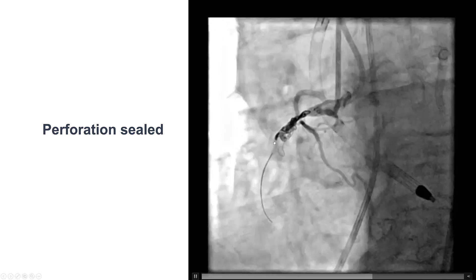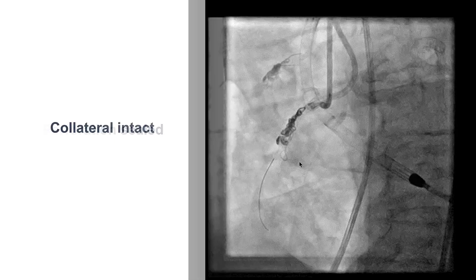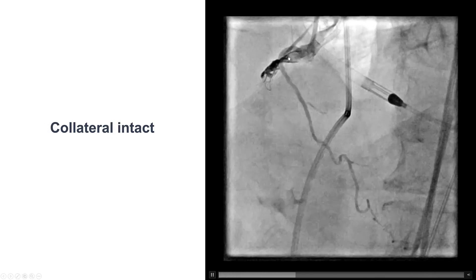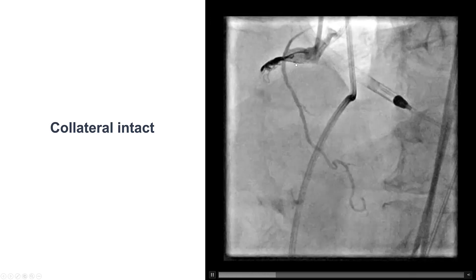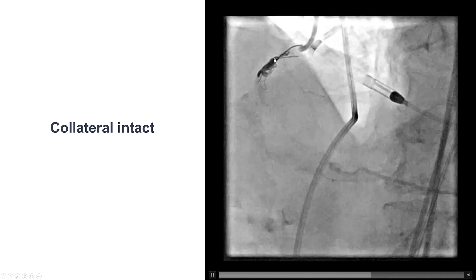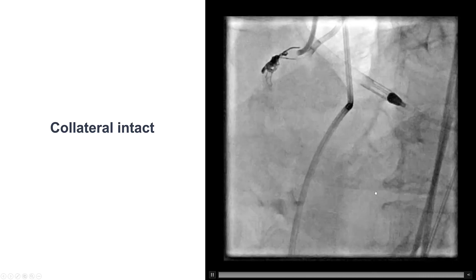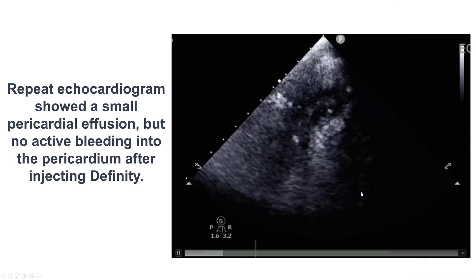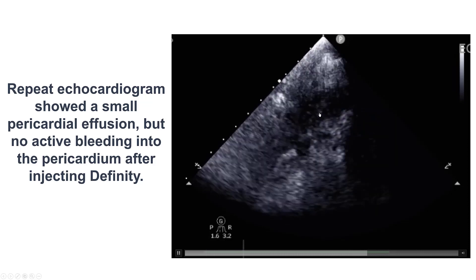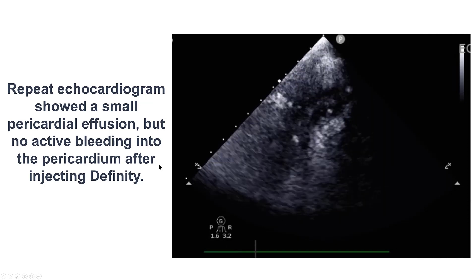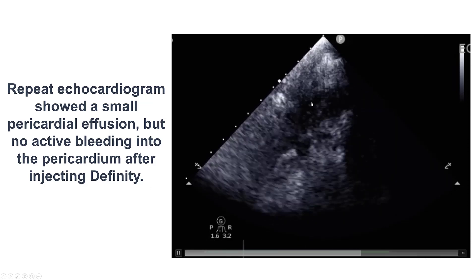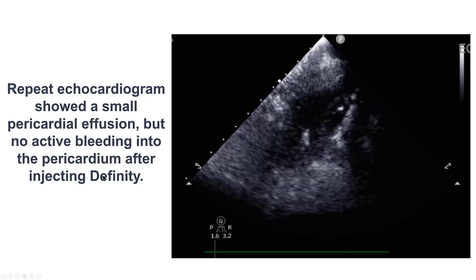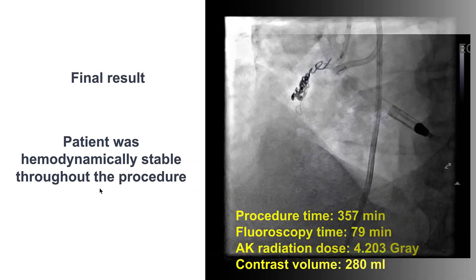We did have a little bit of the coil coming back after release, but the good news was that the collateral — the conus branch feeding the PDA — remained patent throughout the procedure. Echo at the end of the case showed a small pericardial effusion, but once we gave echo contrast (Definity), there were no bubbles coming into the pericardial space, suggesting no active pericardial bleeding.